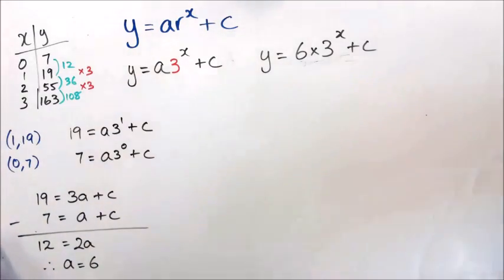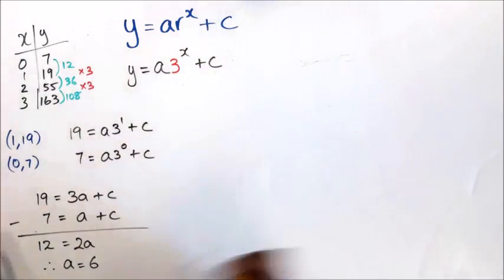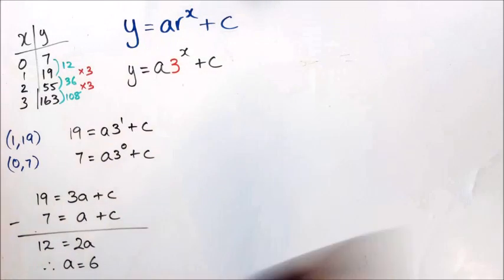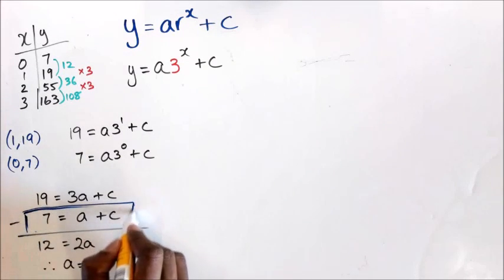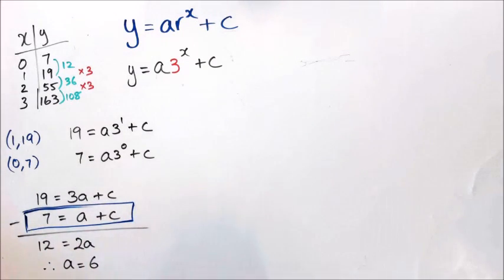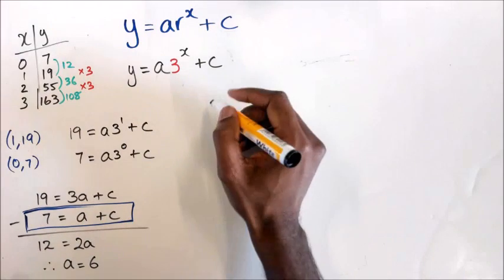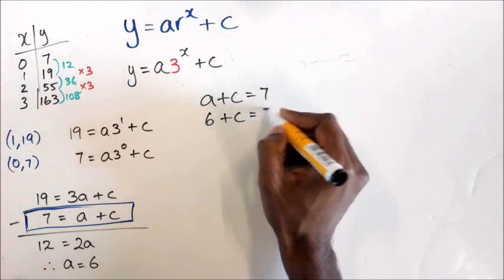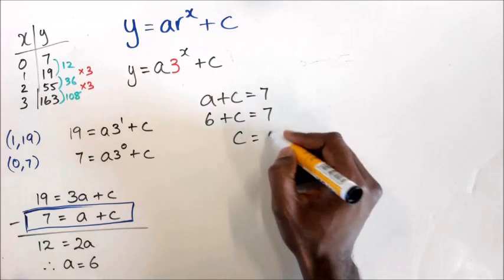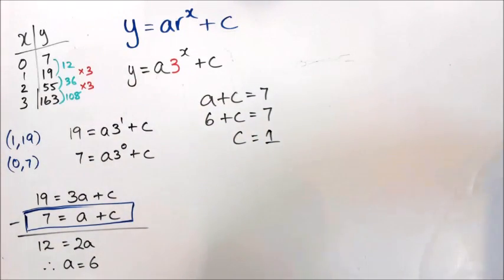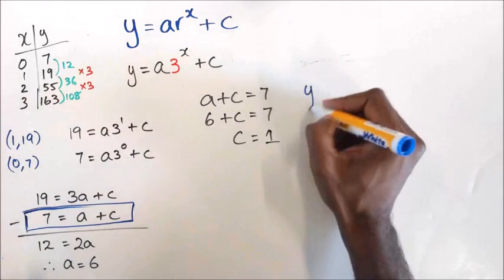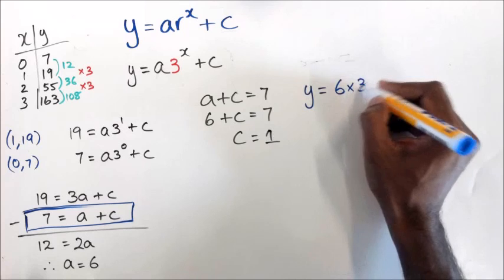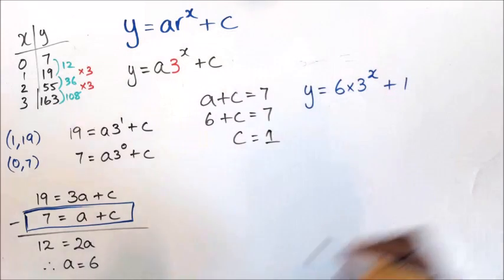I can figure out what c is directly. Since a equals 6, and using the equation where a plus c equals 7, I have 6 plus c equals 7, so c equals 1. My equation is y equals 6 multiplied by 3 to the power of x, plus 1.